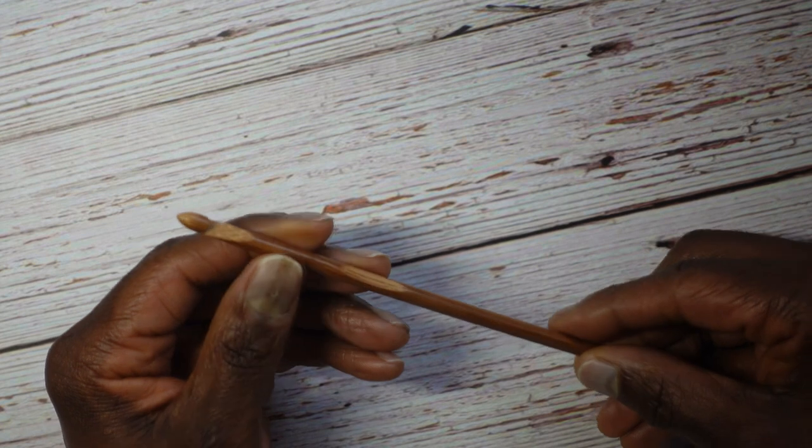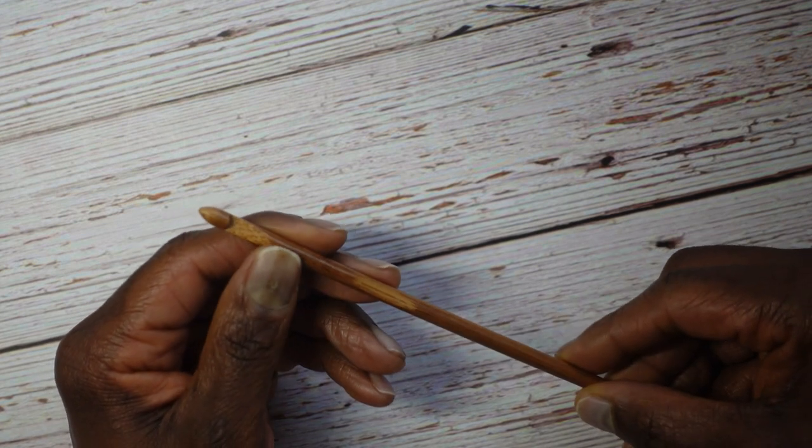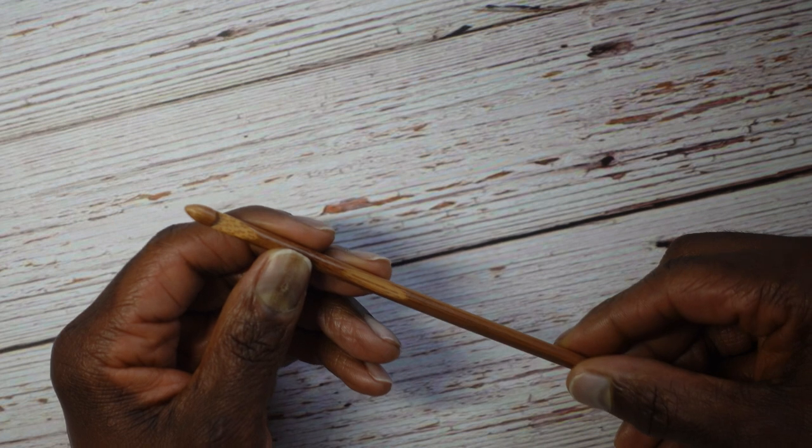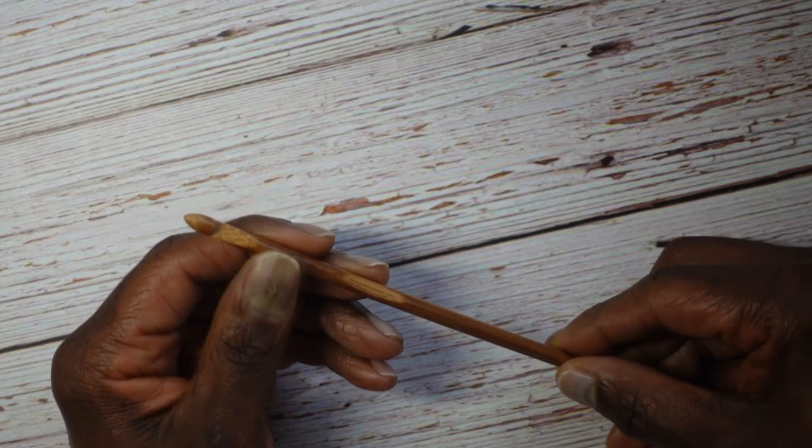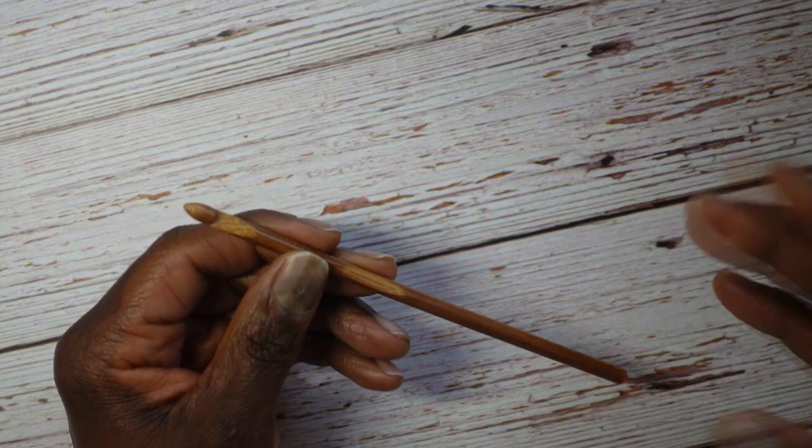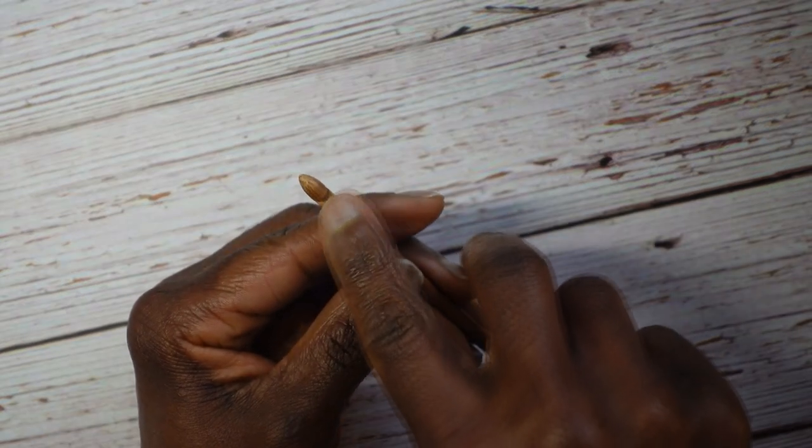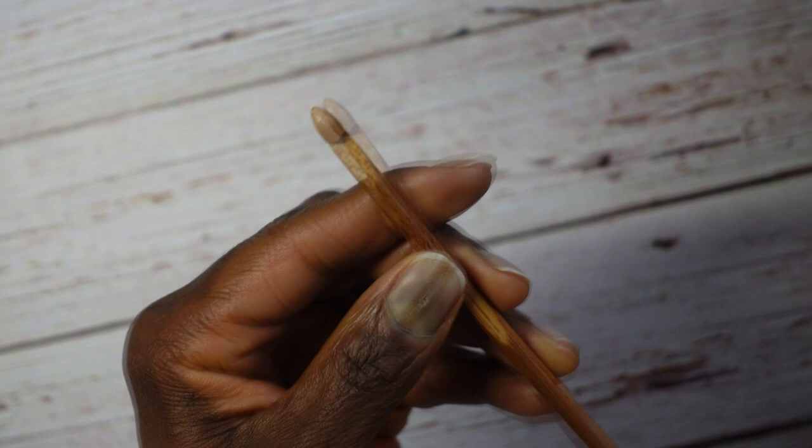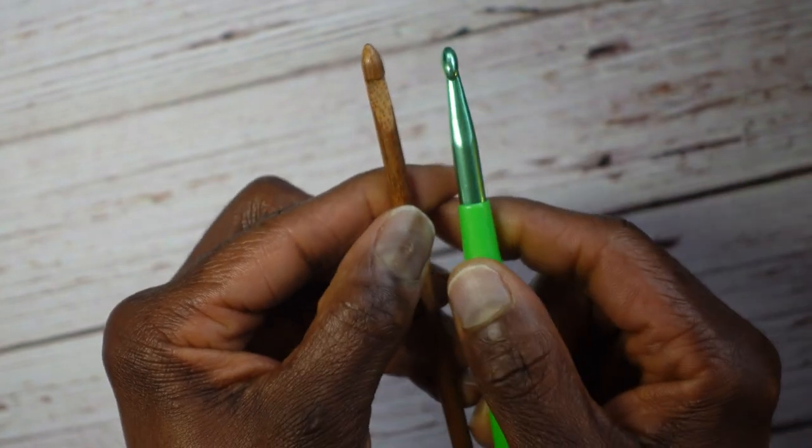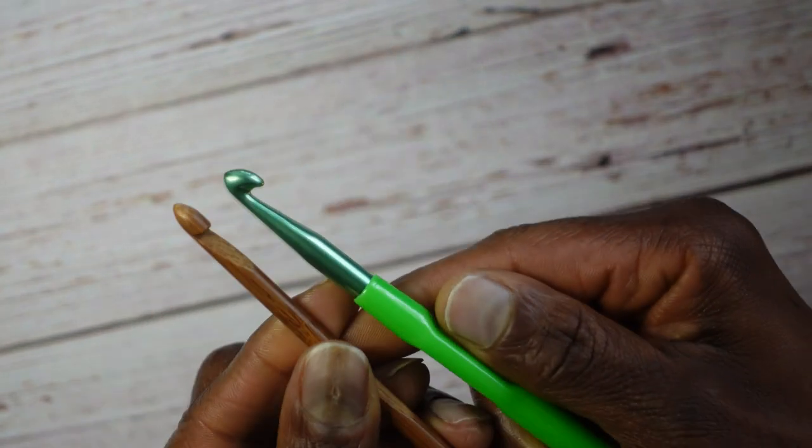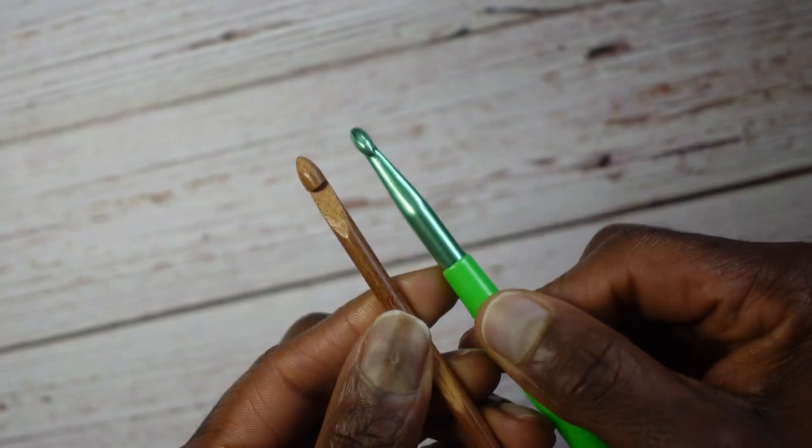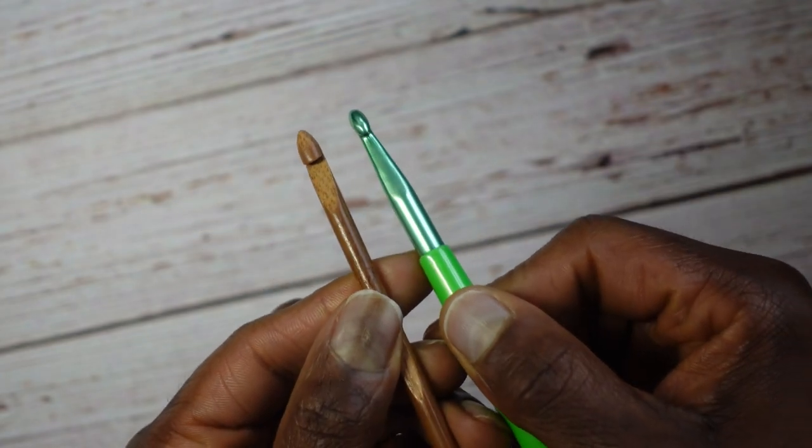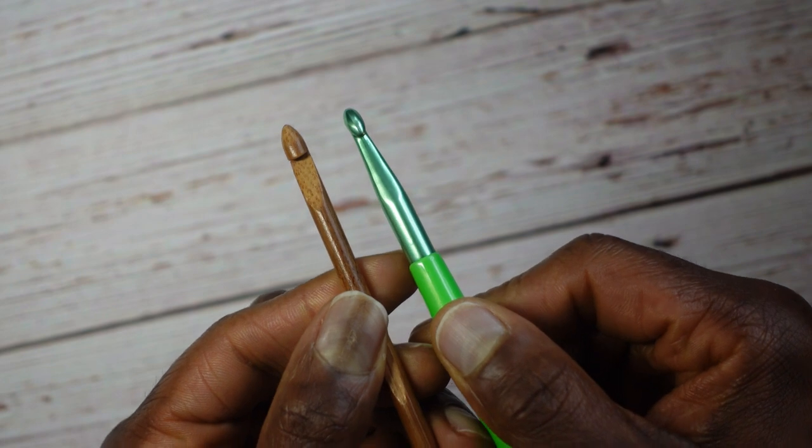The thing that I don't care for, or I shouldn't say I don't care for, it just takes some getting used to when you've crocheted only with other types of crochet hooks, is how wide it is there at the top where the hook is. If you look at this one, it's narrower. So if you're not used to that wideness, you're going to split your yarn quite a bit until you learn how to make the appropriate adjustments.